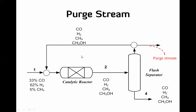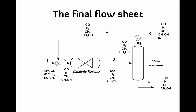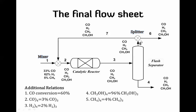When we look at the final flowsheet, instead of having four streams we now have seven, and instead of two units we have four — including the splitter and the mixer. The flowsheet is getting more complicated. To remind ourselves of the additional relations: we have 60% conversion, four relations between stream 3 and stream 4 for each component, and one more relation for the splitter — a 90/10 splitting ratio. These are all the relations we know before doing the degrees of freedom analysis.